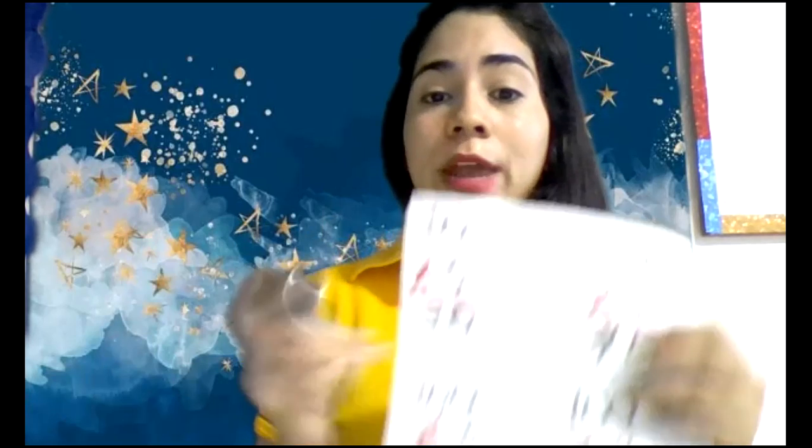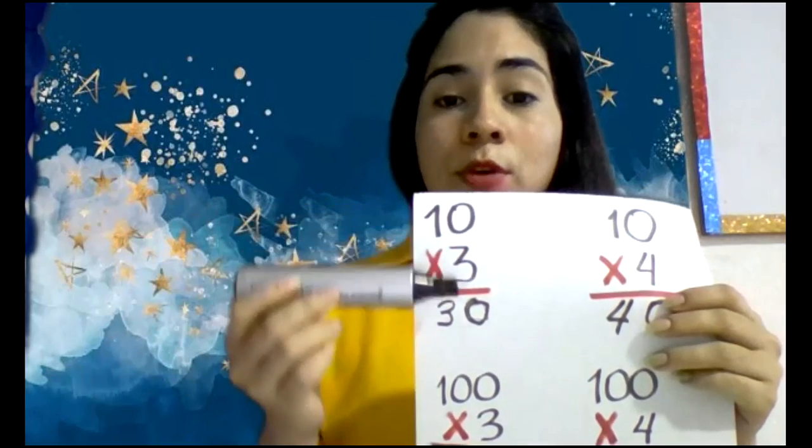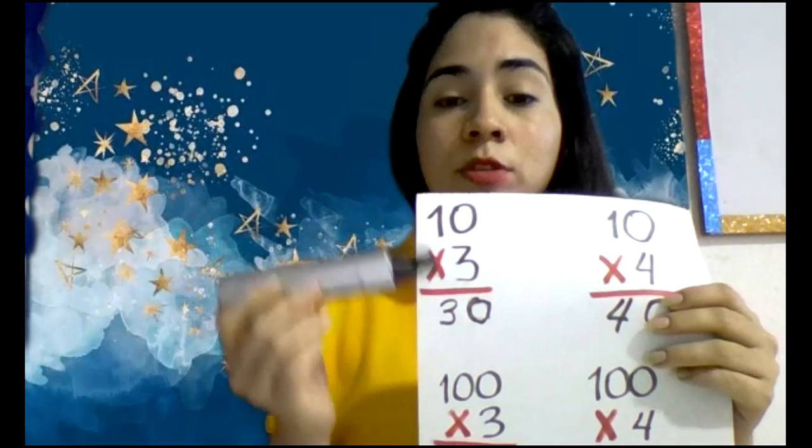Now let me tell you in Spanish. Les voy a decir en español. Los múltiplos son el resultado de multiplicar un número por otro número. Por ejemplo, estoy multiplicando 10 por 3, 10 por 3.